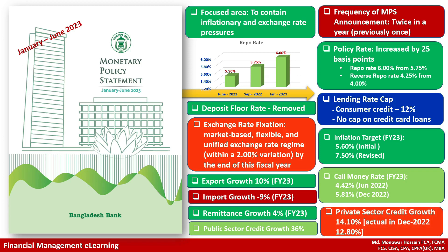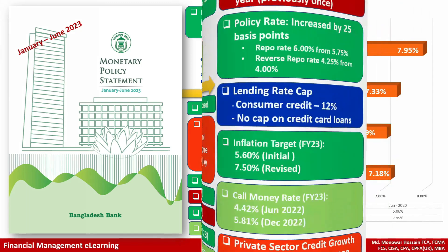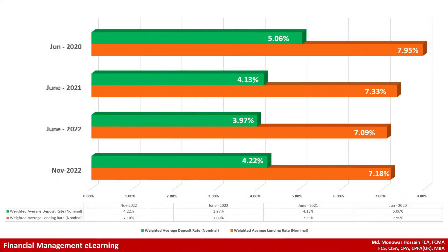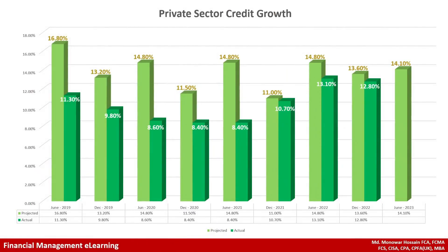The private sector credit growth target was 14.1 percent; the actual in December 2022 was 12.8 percent. The weighted average deposit rate (nominal) in November 2022 was 4.22 percent, and the weighted average lending rate (nominal) was 7.8 percent.